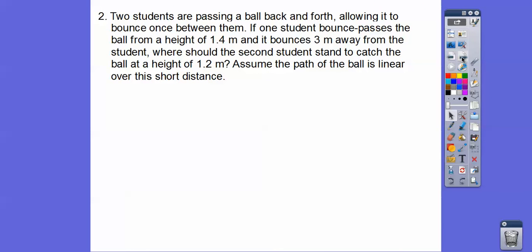Let's try another one here. Two students are bounce-passing a ball back and forth, allowing it to bounce once between them. So this is just like that mirror thing. If one student bounce-passes a ball from a height of 1.4 feet, so he's over here at 1.4 feet, and it bounces away, three feet away from the student. So over here, it's going to be three feet away. So it goes bounce. This distance right here is three. And then so where should the other student stand to catch the ball over here at 1.2 feet? So here's a picture right here. So he's at 1.4 feet, and just treat this as 0,0. Makes it nice and easy that way. Here's the vertex, 3,0, because it's three distance away right there.